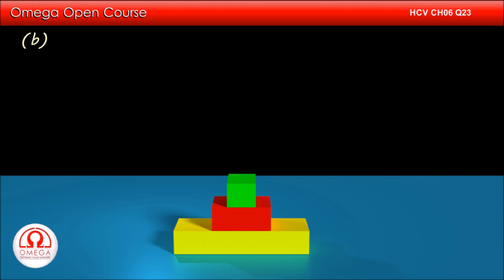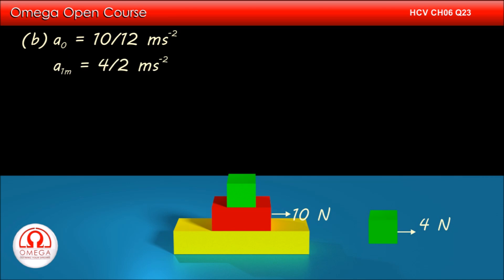In part B, the force is being applied on the middle block. If all the masses move together, then as calculated in the last part, their common acceleration will be 10 by 12 meters per second square. In this case, the only horizontal force acting on the topmost block is friction. The maximum value of friction is 4N, and since the mass of the block is 2 kg, its maximum possible acceleration is 2 meters per second square.